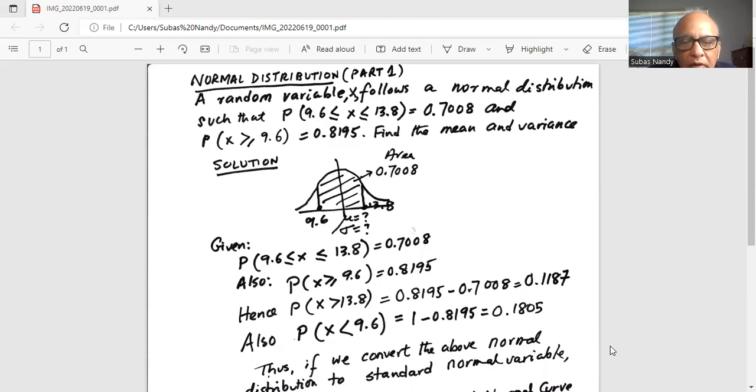So we know P(X > 13.8). Similarly, we can find P(X < 9.6). Since P(X ≥ 9.6) = 0.8195 and the total area under the curve is 1, the probability of X less than 9.6, which is the area from negative infinity to 9.6, is 1 - 0.8195 = 0.1805.